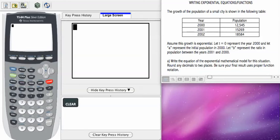So we're given that the growth is exponential. We're also given that t equals zero represents the year 2000.